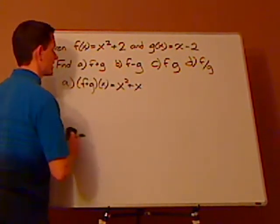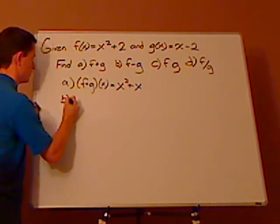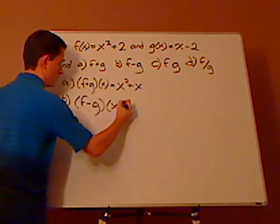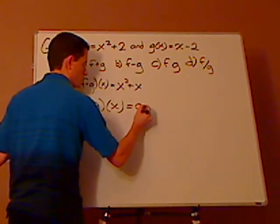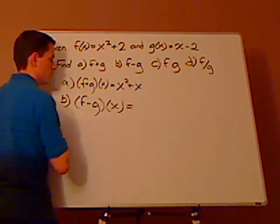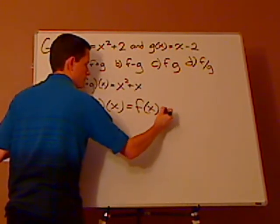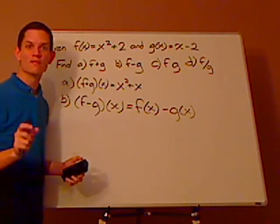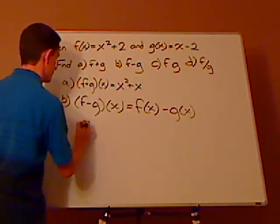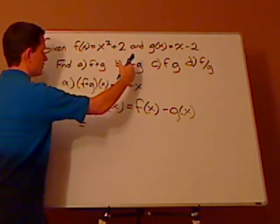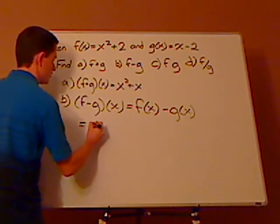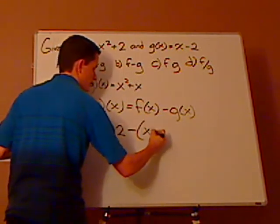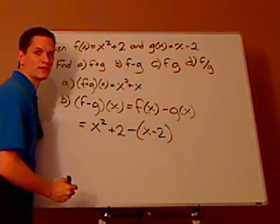Similarly, you do the same thing when you subtract. Moving on to part b, you're subtracting the functions: f of x minus g of x. When there's a minus sign, you want to be careful — you don't put f in parentheses, but you do want to put the g function in parentheses. So you get x squared plus 2 minus parentheses x minus 2.